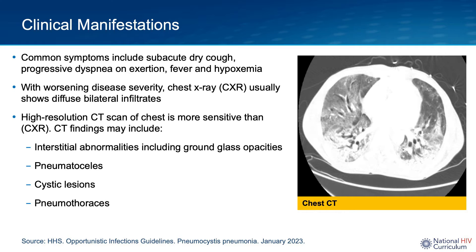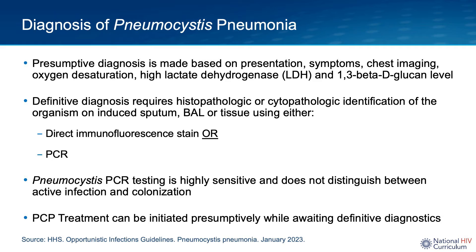On the CT scan, you can see abnormalities that could include diffuse interstitial changes, ground glass opacities, pneumatoceles, cystic lung lesions, and pneumothoraces. When a patient presents, the provider would typically make a presumptive diagnosis of PCP based on their clinical presentation, symptoms, chest imaging, the presence of oxygen desaturations or hypoxia, a high lactate dehydrogenase or LDH level, and also an elevated 1,3-beta-D-glucan level.